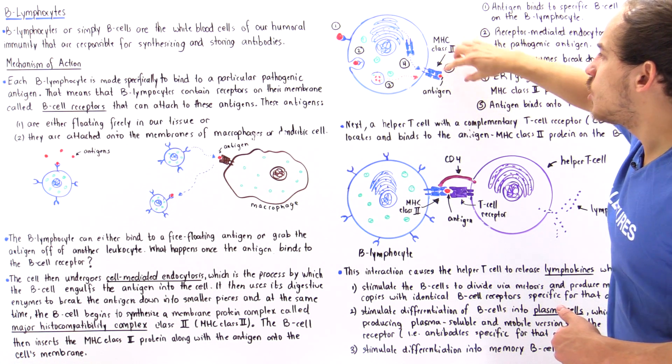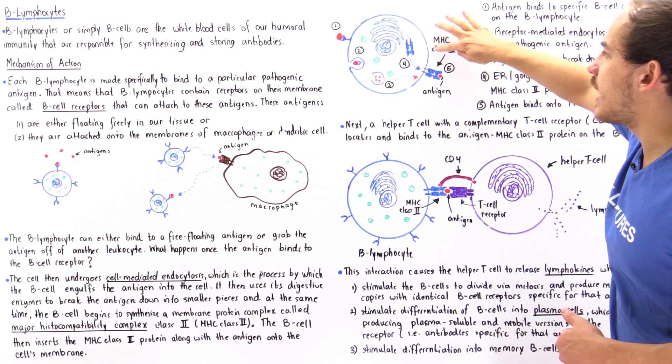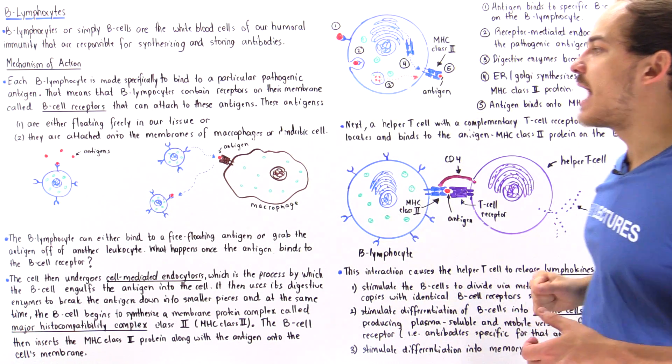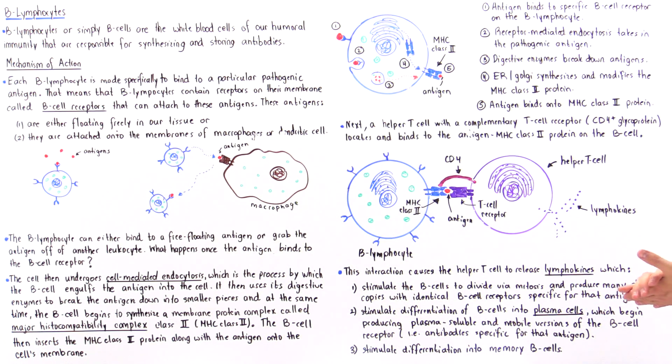Now we have the antigen and the MHC class 2 complex on our B cell. What happens next?